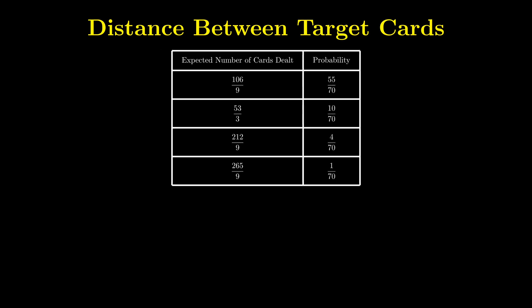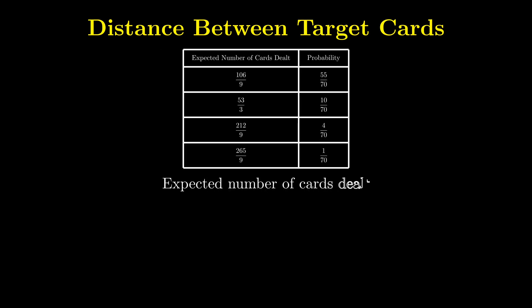Finally, the expected number of cards dealt is the sum of all the scenarios weighted by their respective probabilities, which gives us approximately 13.5 cards.